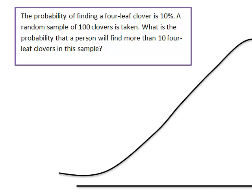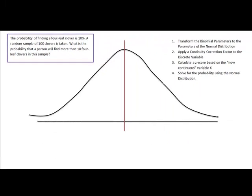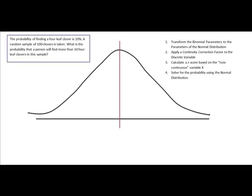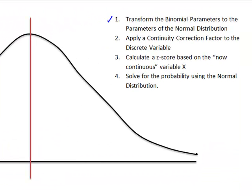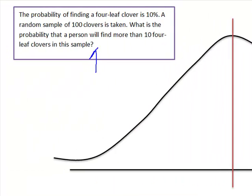I'm going to follow 4 steps. I'm first going to transform the binomial parameters to the parameters of the normal distribution, apply a continuity correction factor, calculate my z-score, and then solve. When we talk about the binomial parameters, what we're talking about are the parameters that we take out of this question right here.